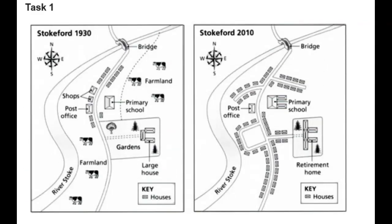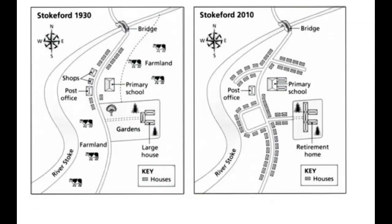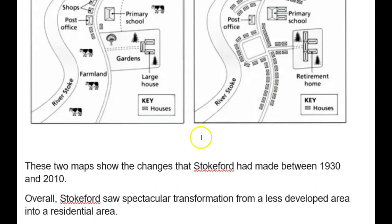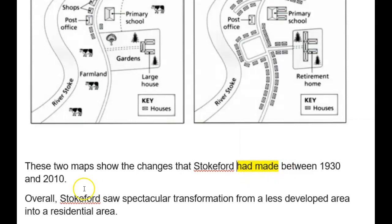So this is a map — I love the maps, I think they're great, there's always lots to say. So you're comparing 1930 with 2010 — what a big difference. So the two maps show the changes that have happened. We're going to talk in a minute about passive tenses — the changes that have happened between 1930 and 2010, or you could say over an 80-year period in Stokeford.